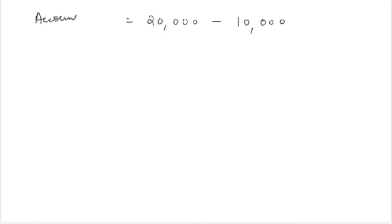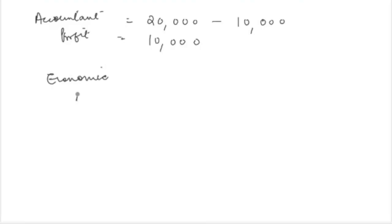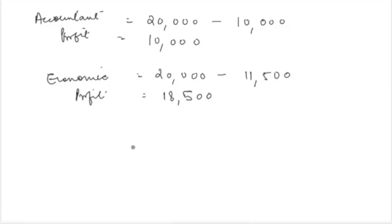...accounting profit would be 20,000 minus 10,000, which equals 10,000 rupees. An accountant treats opportunity cost as an abstract, hypothetical cost with no actual exchange of money, and so excludes it. However, economic profit would be 20,000 minus 11,500, which equals 8,500 rupees, because an economist also considers the opportunity cost.